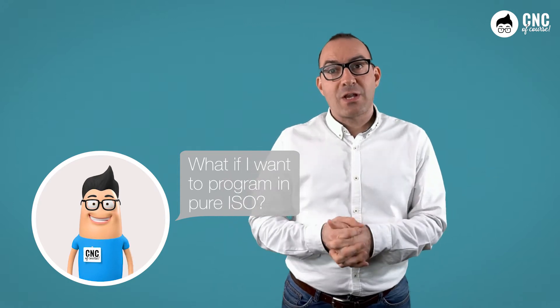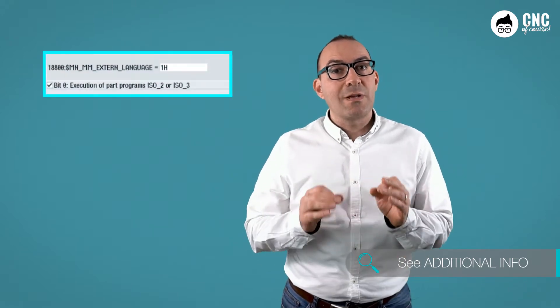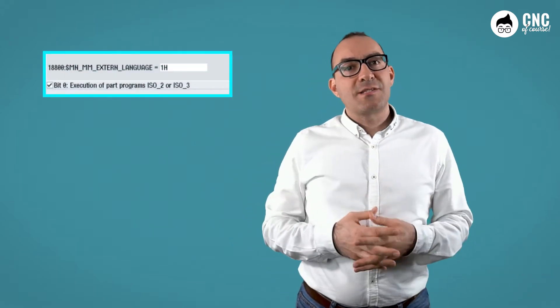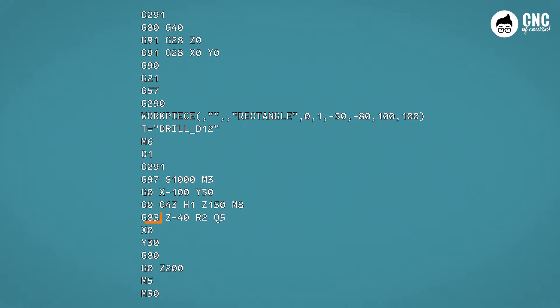Well, first of all Paolo, I'd like you to explain why you want to do this. In any case, Siemens does everything in its power to make sure that if you want to program in the pure ISO version, all you have to do is set a machine datum, exactly 18800. Setting bits 0 to 1 will enable the writing of programs in ISO programming, where for example, for drilling you can use the cycles G81 to G83, for the releases, the functions G28, for the activation of the two-length corrector, the function G43, and so on.